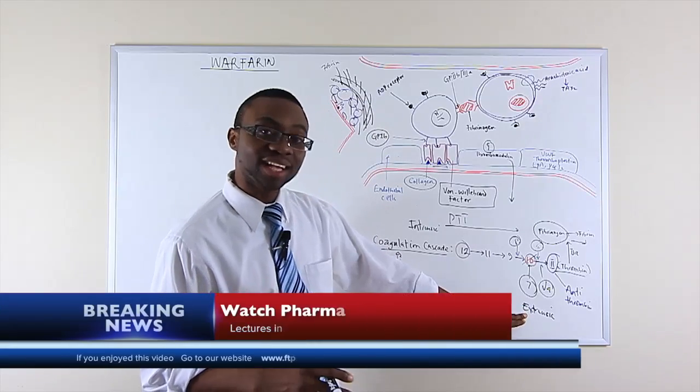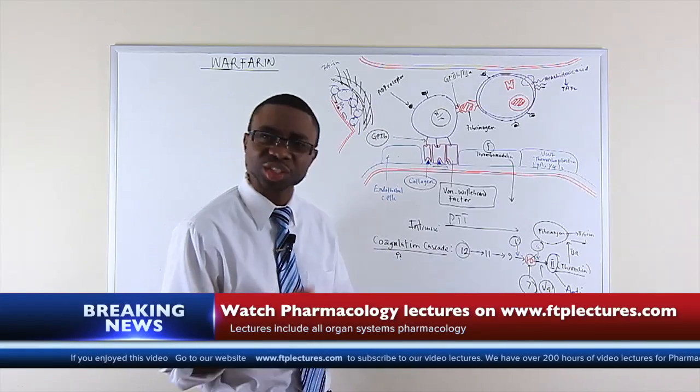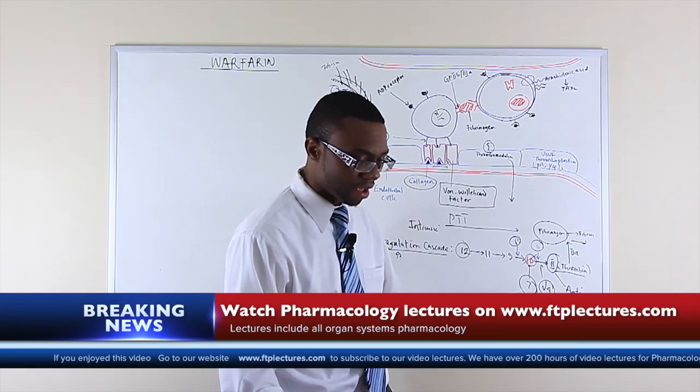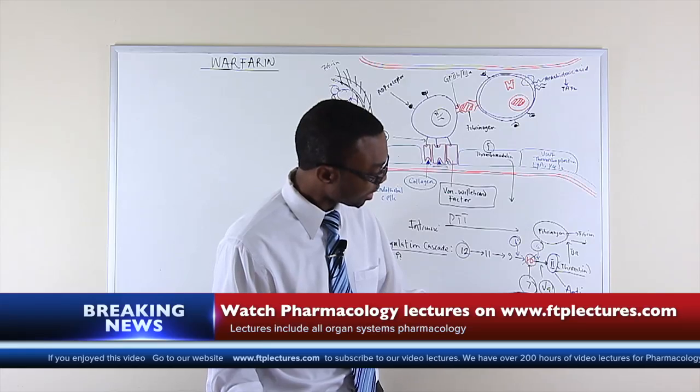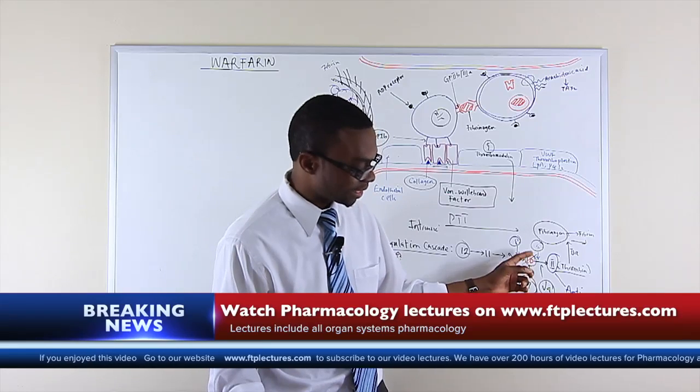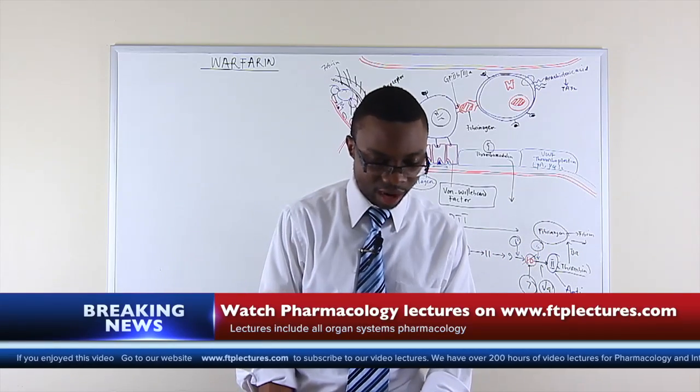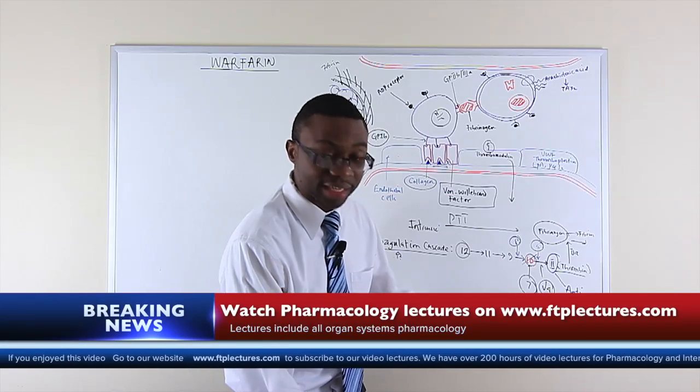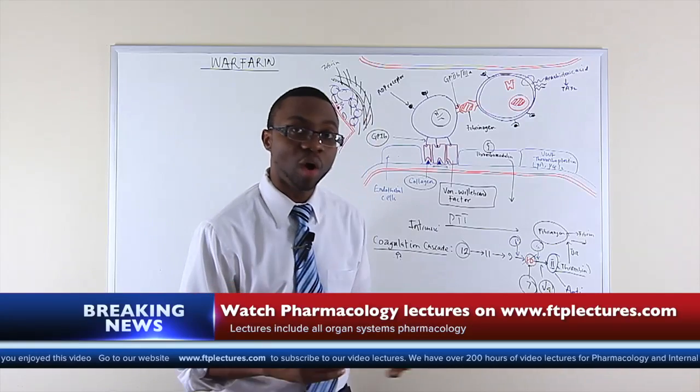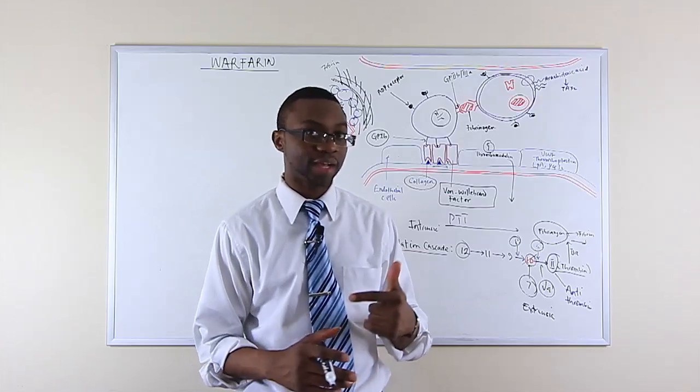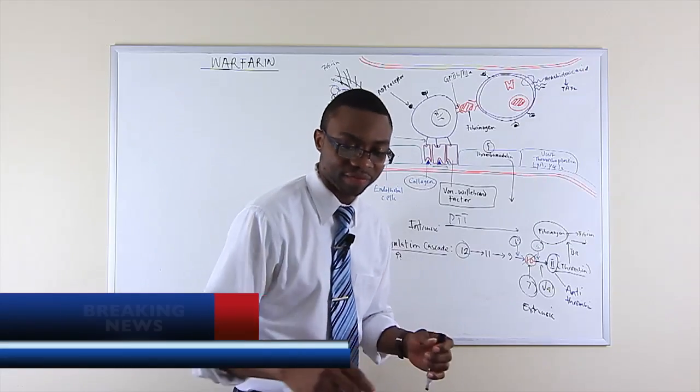As you can see here, I told you there's an extrinsic pathway and the extrinsic pathway is very short. It basically takes tissue factor and we have factor 7, and factor 7 eventually is converted to factor 10. Factor 10 eventually converts to factor 2 which goes to 2a and then we form fibrinogen to fibrin. Now warfarin has an effect on certain coagulation factors and these coagulation factors are factor 2, factor 7, factor 9 and factor 10.